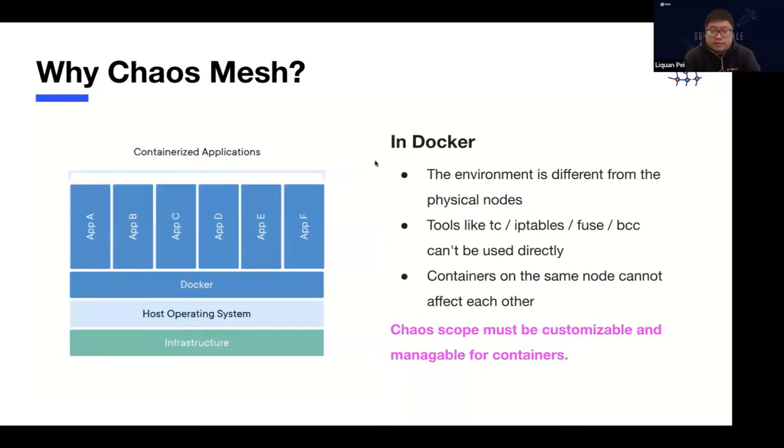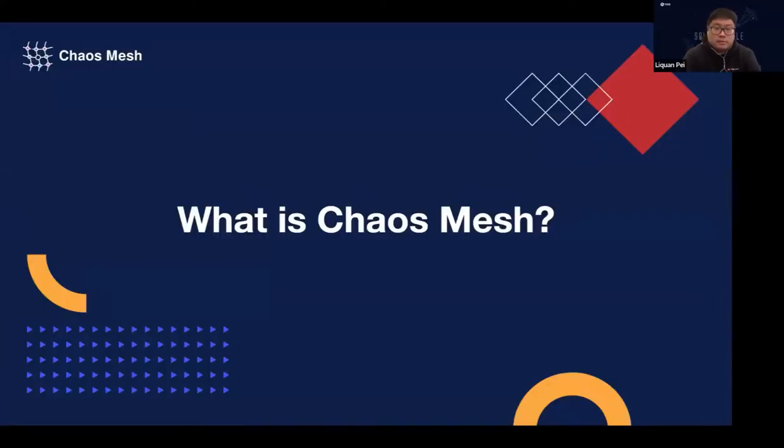There are some other reasons we want to use ChaosMesh, because in Docker, the environment is very different from physical nodes. A lot of tools that are available that can be used to inject failures are not available in the container environment. Then we do have to simulate those failures in another way, typically by modifying the system calls or some things like that. Now let's talk about what is ChaosMesh.